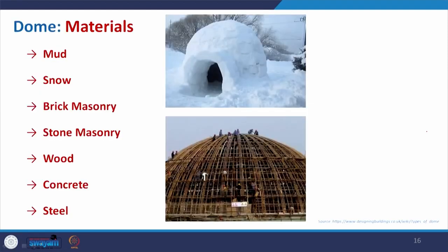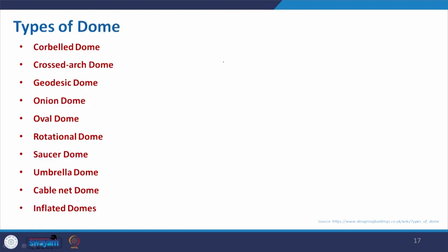Coming to the materials: as already mentioned, domes can be made of mud, snow, brick masonry, stone masonry, wood, concrete, or steel. Here you can see a temporary dome being created with bamboo, beautifully crafted. And here is an igloo being formed with compressed ice blocks.